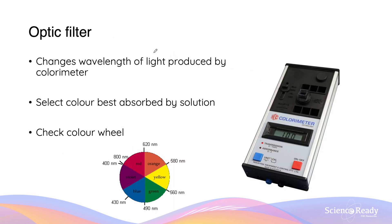The optic filter is what changes the wavelength of light produced by the colorimeter. We want to select the color that is best absorbed by the solution, so we need to check the color wheel. Again, using our example of the orange colored substance: looking at our color wheel, orange colored substances are going to absorb mostly blue light. So to analyze the sample, we are going to analyze how much blue light it absorbs, and thus we select the blue option.